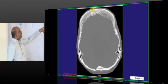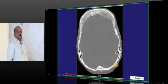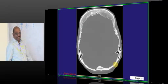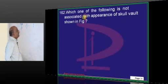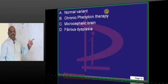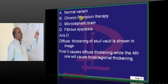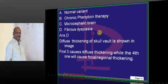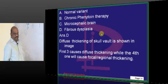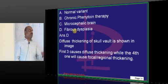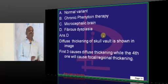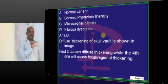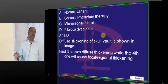What is that appearance of the skull? It is called hyperostosis of the skull — increased opacity of the calvarial bone. Typically it can be a normal variant. It can be chronic phenytoin therapy or a microcephalic brain. But fibrous dysplasia causes hyperostosis focally. So the causes of hyperostosis are divided into diffuse hyperostosis versus focal hyperostosis, which you need to basically remember.